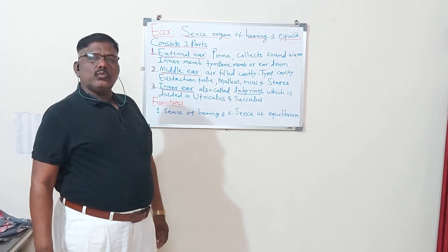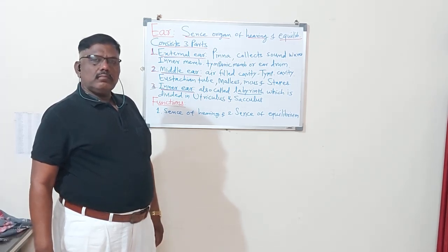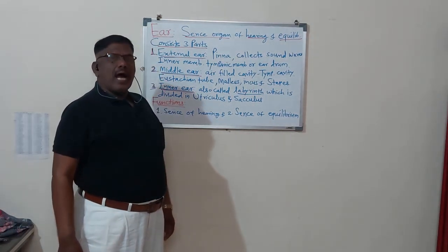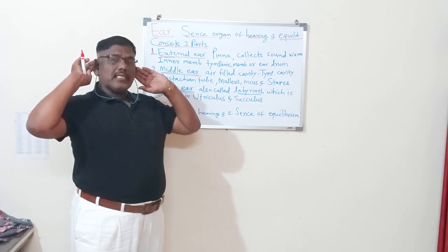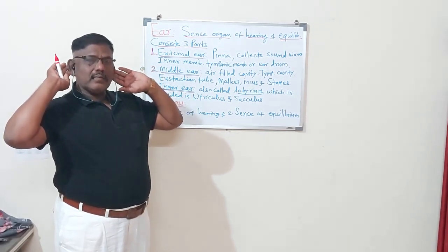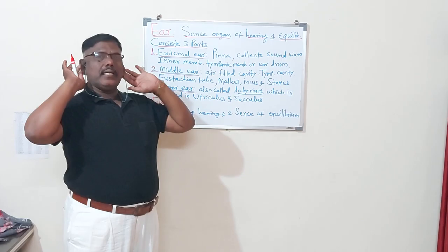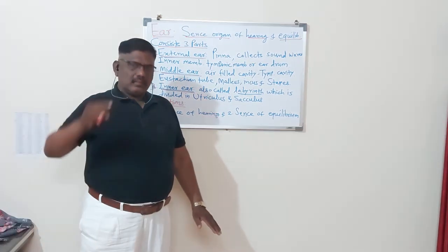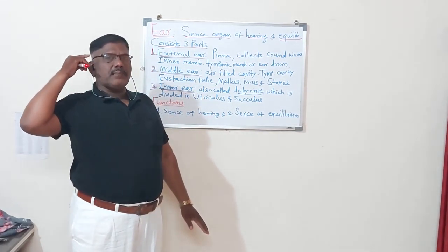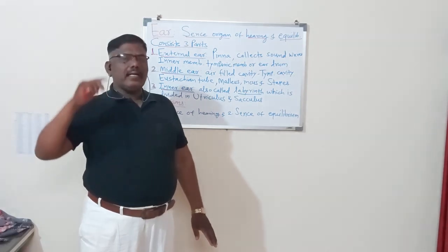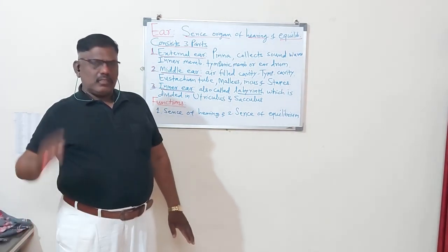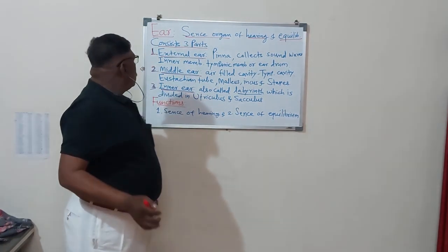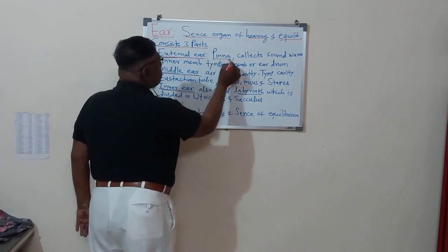Dear students, rat having the external pinna. Pinna means this external structure. This is called as the pinna. So in the rat this pinna is larger. This pinna is called as the external ear. Remember this is external ear, so external ear that is called as the pinna.